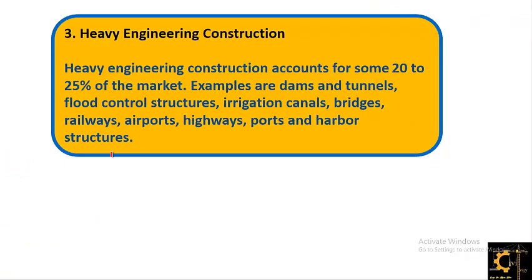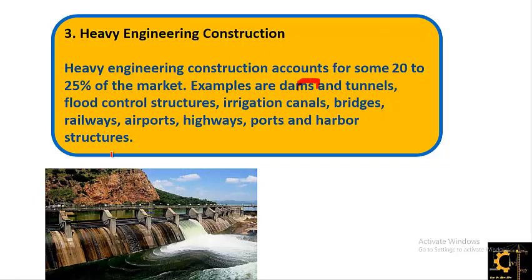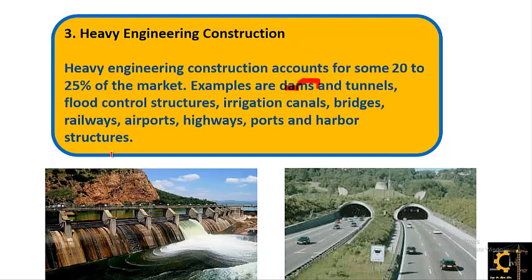The third type is heavy engineering construction, which accounts for about 20 to 25 percent of the market. This is less than residential and building construction because these are very expensive, government-owned projects. Examples include dams, tunnels, flood control structures, irrigation canals, bridges, railways, airports, highways, ports, and harbor structures.